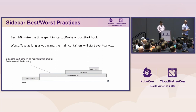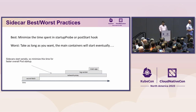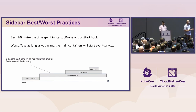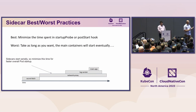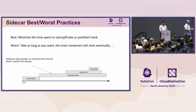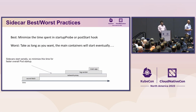The great thing about sidecars is you get serialized startup ordering. But if your startup is really slow, it can become a bad thing. If our network proxy takes a really long time to start up, we don't even begin to start the log sender until the startup probe and post-start hook have completed. And if the log sender also has a really long startup probe, that just lengthens the time before we ever begin to start your main containers. Best practice: minimize the time before your containers go ready so that we can quickly start all the other containers.